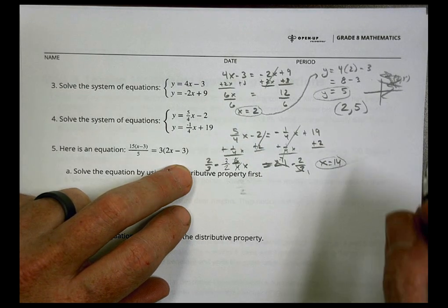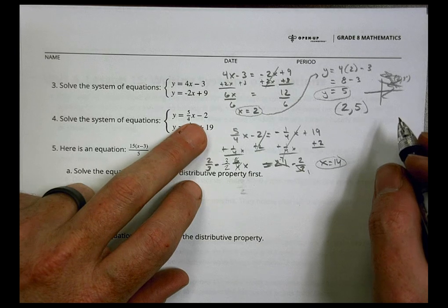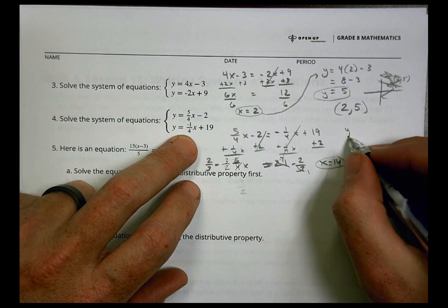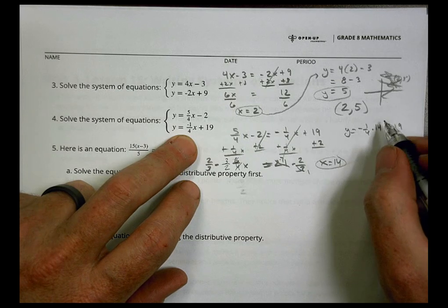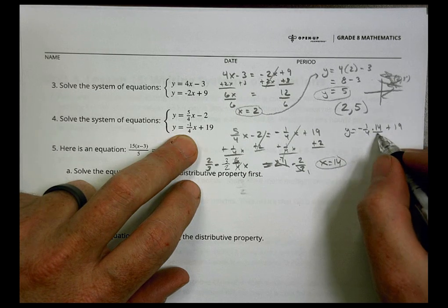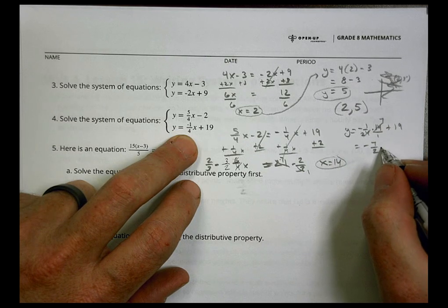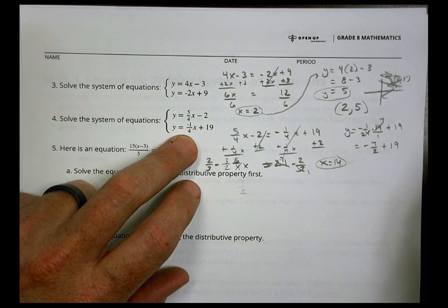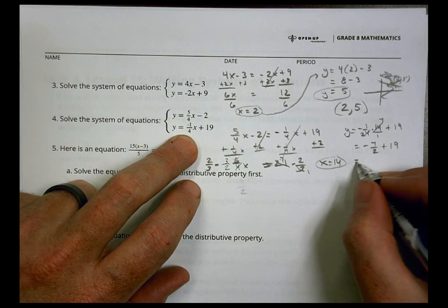That's our first number. Now we can take that and plug it into one of these equations here. I'm going to use the negative 1 because I like the negative 1 having a small number. So y equals negative 1/4 times 14 plus 19. So I get 14/4, which is 7/2. So I have negative 7/2 plus 19.